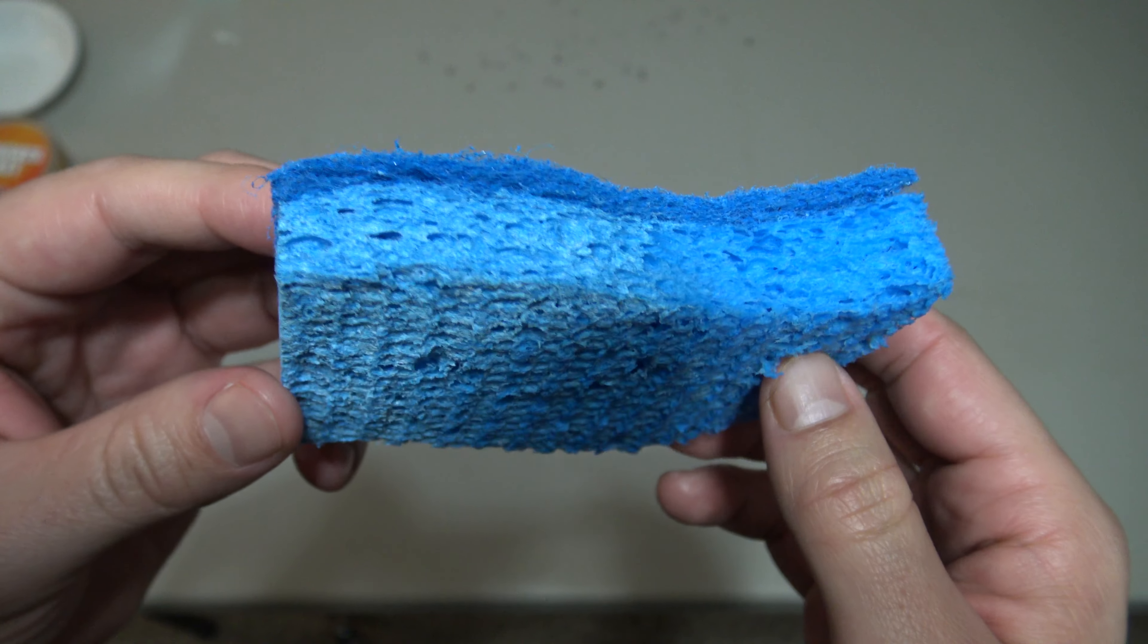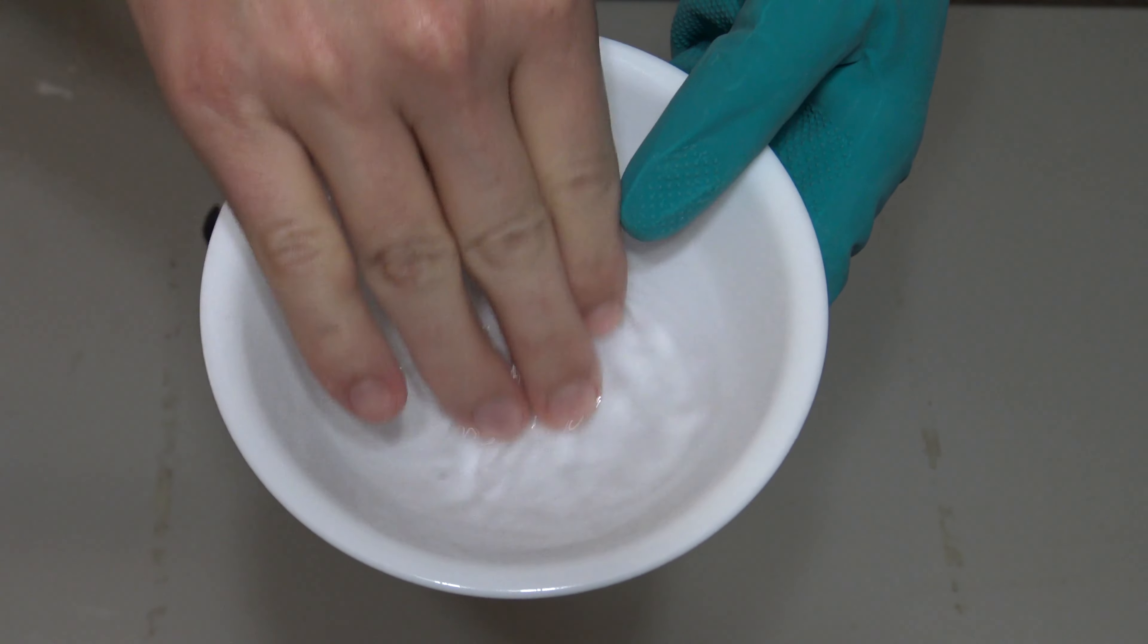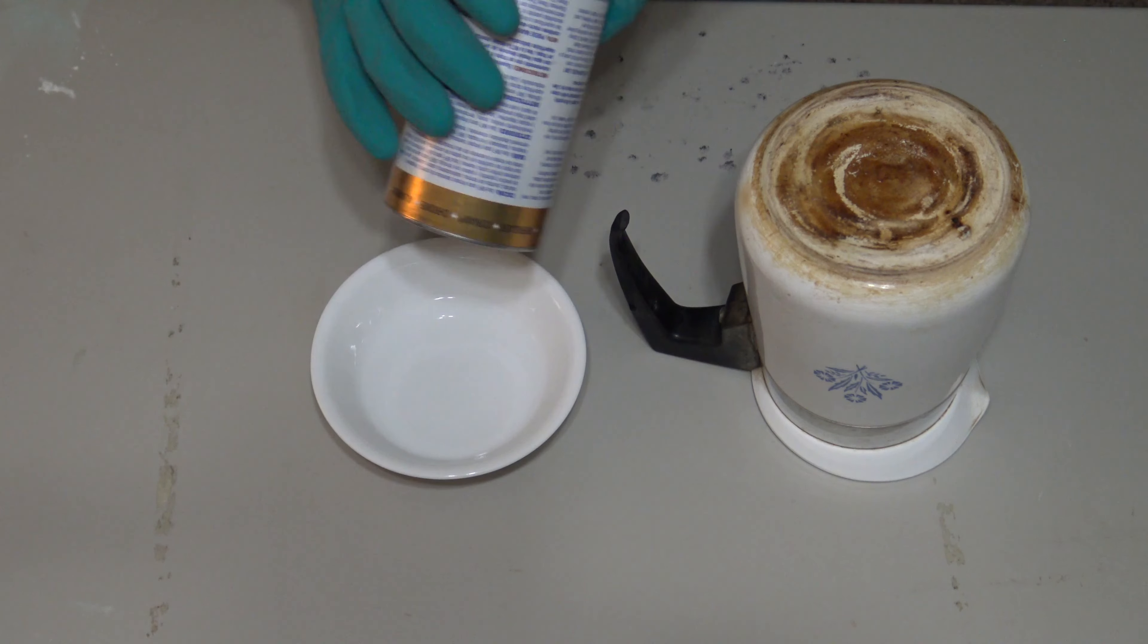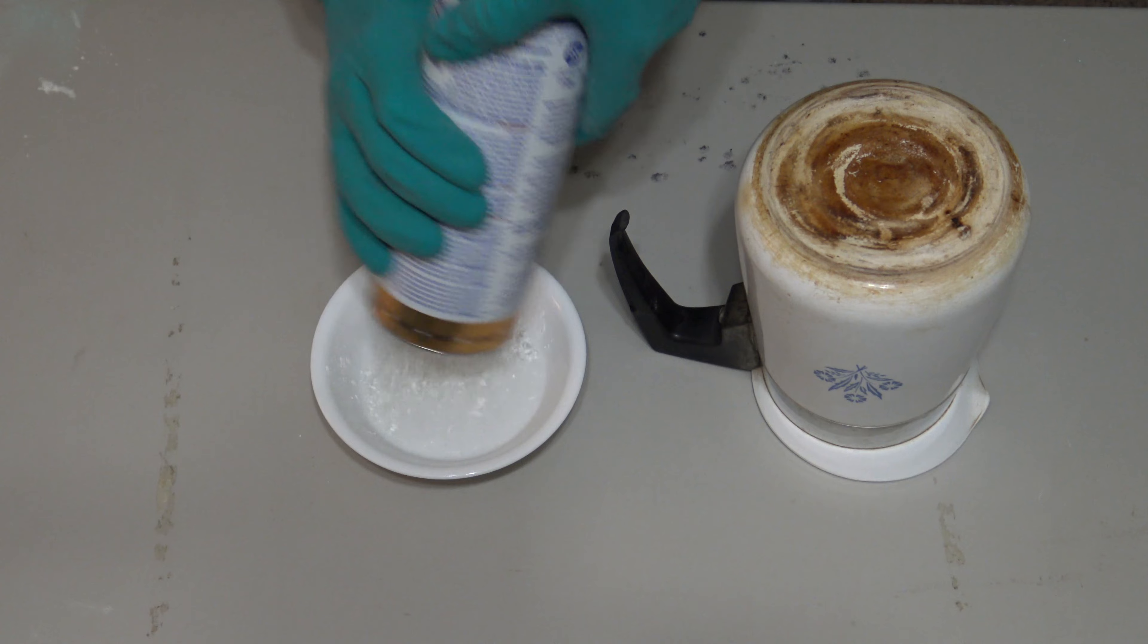Make a paste by mixing a small amount of warm water with the Bar Keeper's Friend. Make sure it's not too runny, or it won't stay on the pot.